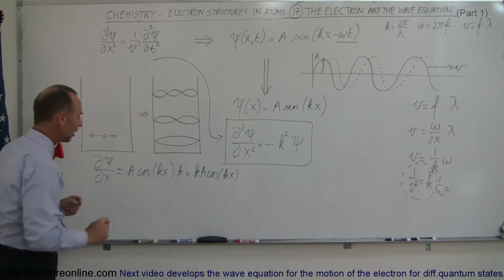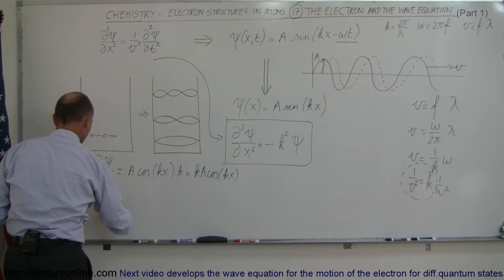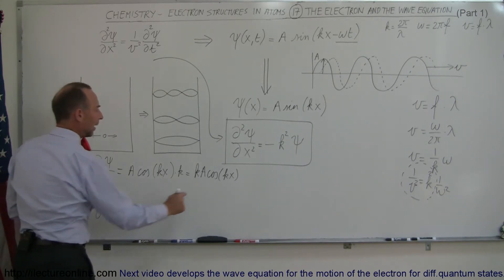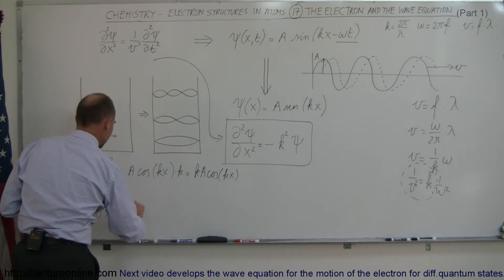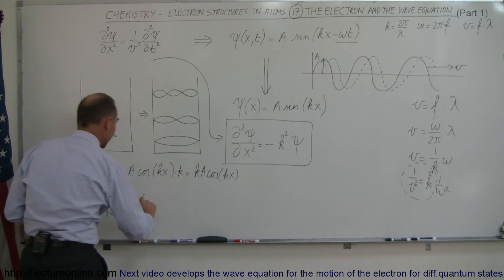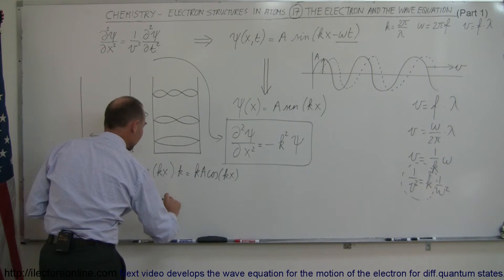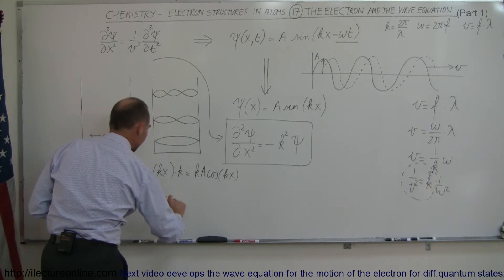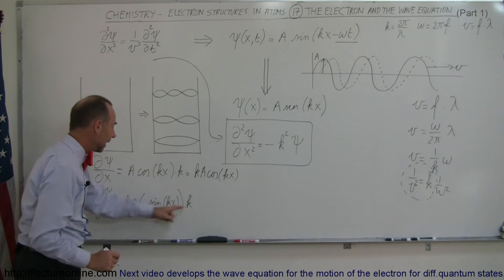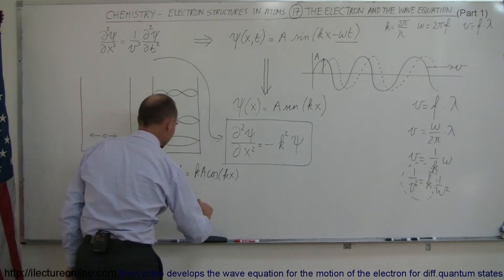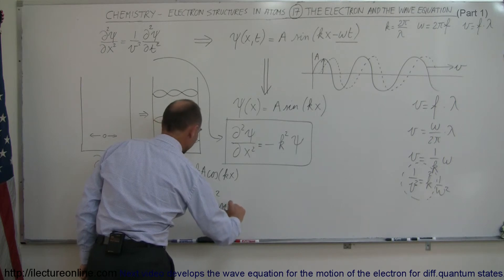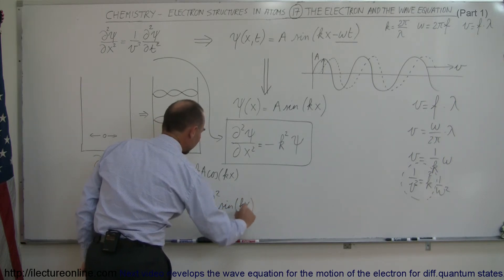If I now take the second derivative of the wave function with respect to position x, I take the derivative of KA times cosine of Kx. The derivative of cosine is negative sine, so I get negative sine of Kx times the derivative of the angle, which is K — and that's where I get K squared and the negative. So this is equal to minus K squared times the sine of Kx.